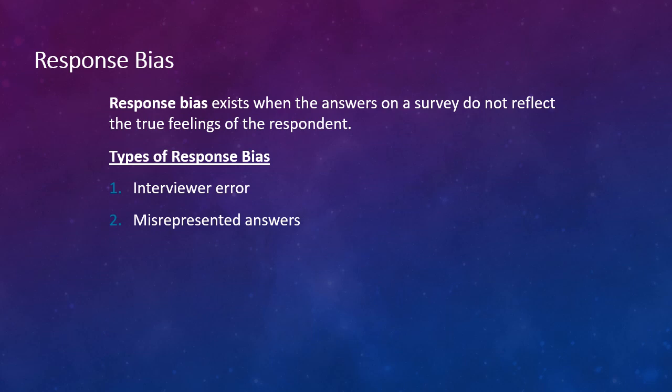Another type of response bias is misrepresented answers. Some survey questions result in responses that misrepresent facts or flat out lies. One of the most common of these is reporting of salary. The book says that a survey of recent college graduates may find that self-reported salaries are inflated. Typically, if you look at survey data, a lot of salary data, income data tends to be inflated by people.